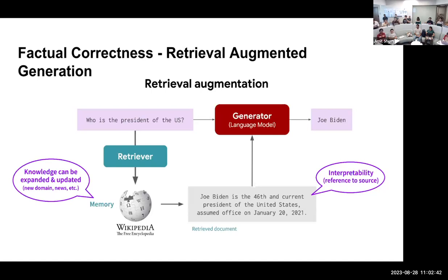This is retrieval augmented generation. As mentioned, it's a generic process where you have your language model generator plus a retriever as part of the pipeline. The retriever's function is to retrieve knowledge relevant to the context in the question from an external information source like Wikipedia and append it to the prompt. The answer generated is then more likely to be correct, and you can also trace it back to the retrieved piece. Different flavors of this are emerging almost every day.